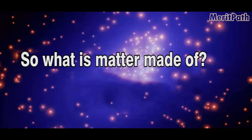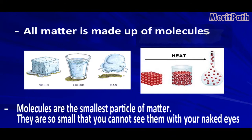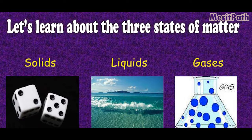So what is matter made of? All matter is made up of molecules. Molecules are the smallest particle of matter. They are so small that you cannot see them with your naked eyes. Let's learn about the three states of matter.